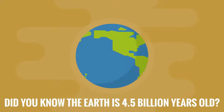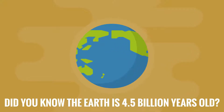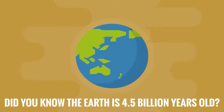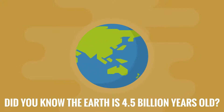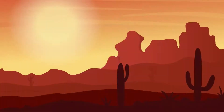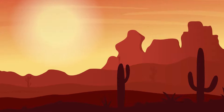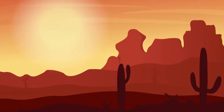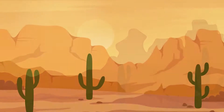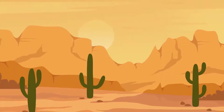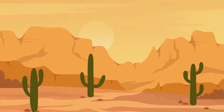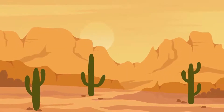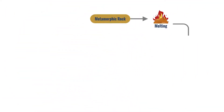Did you know the Earth is 4.5 billion years old? Rocks and fossils provide clues that help geologists determine the ages of rocks and the history of our planet. The concept of the rock cycle is used to explain the continuous changing of rocks from one type to another and back again.